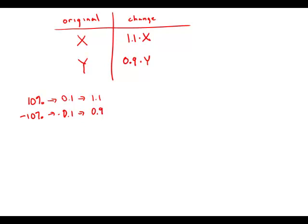So the question asks: the reduced price per share of stock Y is what percent of the original price of stock X? If we were going to figure that out, that would be 0.9Y divided by X, times 100%. And really, the only thing we don't know is this ratio Y over X. If we could figure out Y over X, we could answer the question.